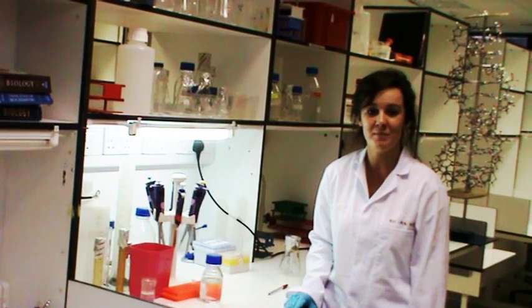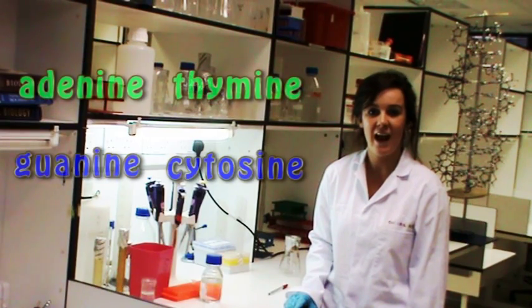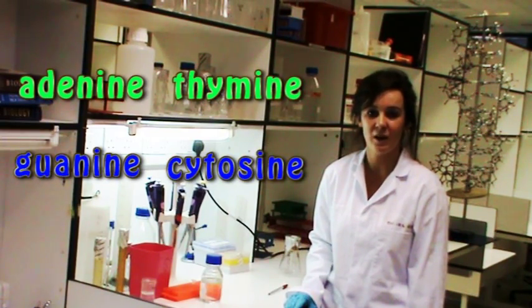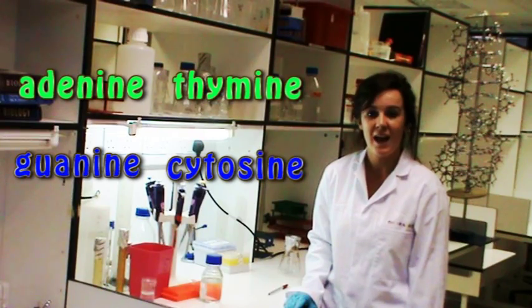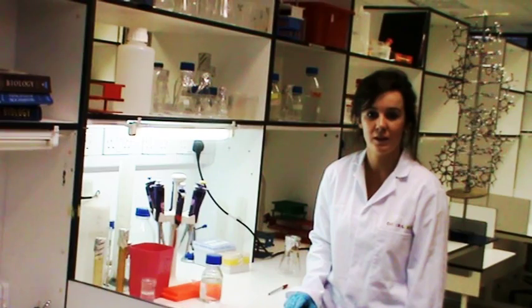Using just four building blocks, it codes for all the information that makes up living organisms. These are adenine, thymine, guanine, and cytidine. These building blocks are bound to a sugar phosphate backbone. Together they make up the double helix.